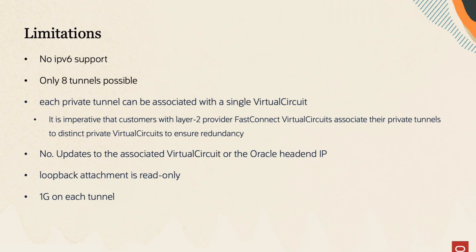Now let's take a look at some of the limitations for this feature. First, there is no IPv6 support. For ECMP, only eight tunnels are possible. Each private tunnel can be associated with a single virtual circuit, so customers with Layer 2 provider FastConnect virtual circuits must associate their private tunnels to distinct virtual circuits to ensure redundancy. There are no updates allowed to the Oracle head-end IP once it has been set. The loopback attachment is read-only, so you cannot add static routes or change routing on it. Maximum throughput per tunnel is 1 Gbps.